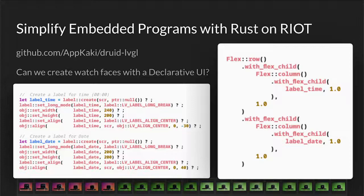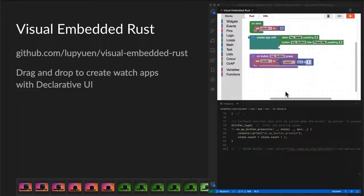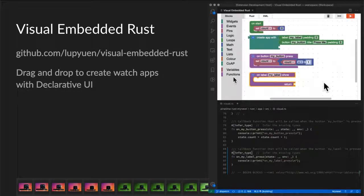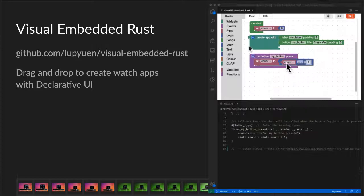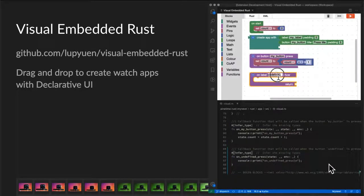LVGL can get quite cumbersome for creating watch faces. We need to arrange labels and other widgets by exact pixel positions — xy-coordinates. Can we create watch faces with a declarative UI instead? So instead of putting widgets by xy-coordinates, we lay them out into a table by row and by column, much like HTML. We're taking Druid, a Rust declarative UI framework, and changing it so that it renders with LVGL widgets. When we have a declarative Rust user interface, we can do many interesting things. Here's something that we created with Blockly and Druid. Visual Embedded Rust is an extension for VS Code that lets you drag and drop little blocks of program logic to create watch apps. You can see that when we drag and drop the blocks into the program, it actually generates Rust code for the watch app.